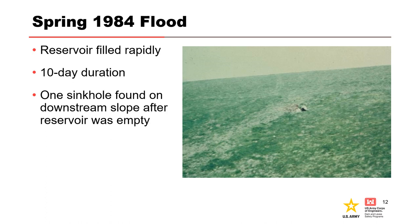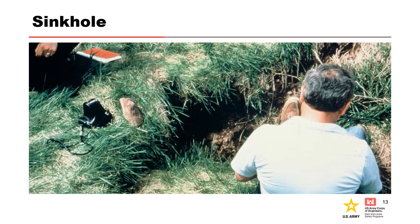A large flood event rapidly filled the reservoir behind Broadhead Dam on April 18, 1984. On May 4, a large sinkhole was observed at Station 4+13 on the downstream side of the embankment, about 160 feet downstream of the centerline. The sinkhole was about 6 feet in diameter and 4 feet deep.